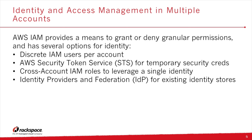When talking about IAM and how it relates to multiple accounts, AWS IAM provides several methods for providing identity and authorization. The first method is discrete IAM users per account — a simple and recognizable way of managing users. You assign permissions directly to them. It's the easiest way to set up IAM within AWS, but as you scale and add more accounts, the complexity of managing multiple identities becomes problematic.